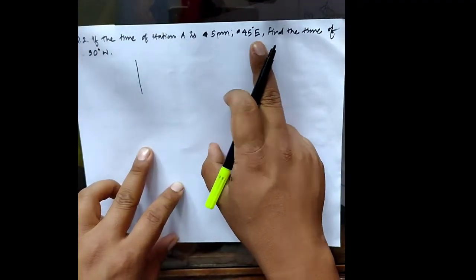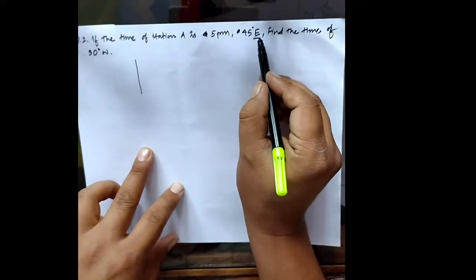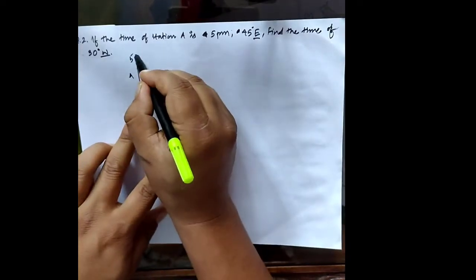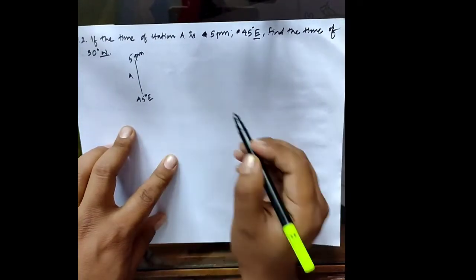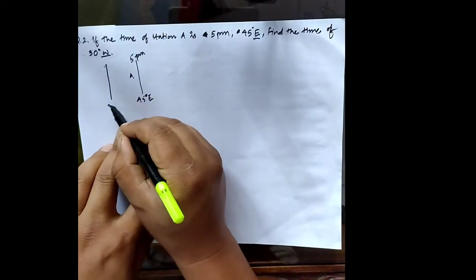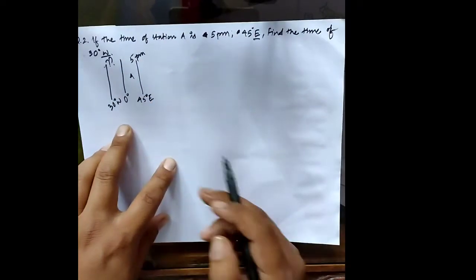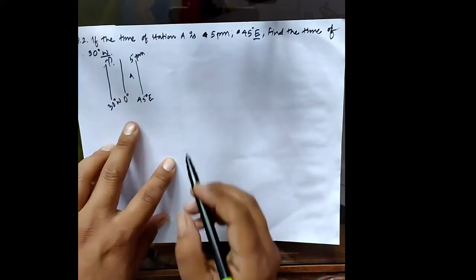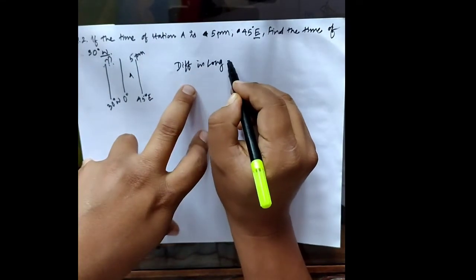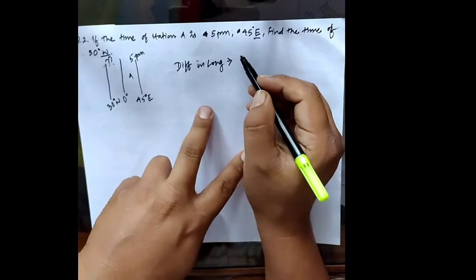Now here is another example using different hemispheres. The data provided: station A has a time of 5 p.m. at 45 degrees east, and station B is at 30 degrees west — so it lies behind. The prime meridian passes between these two longitudes. Since they are in different hemispheres, we have to add the longitudes.